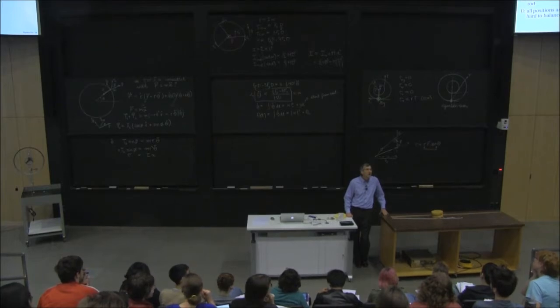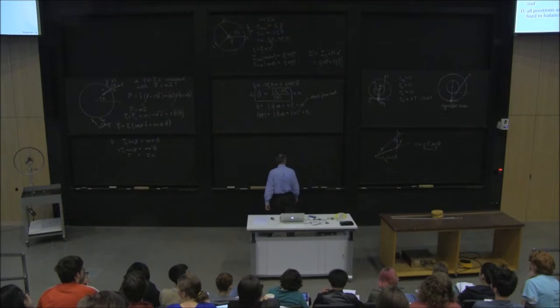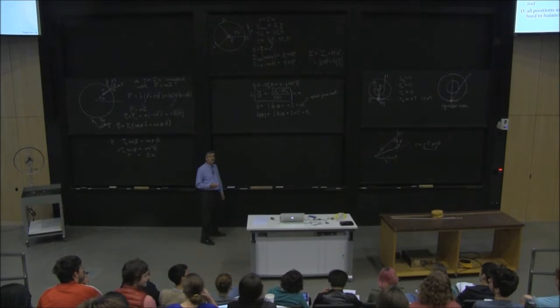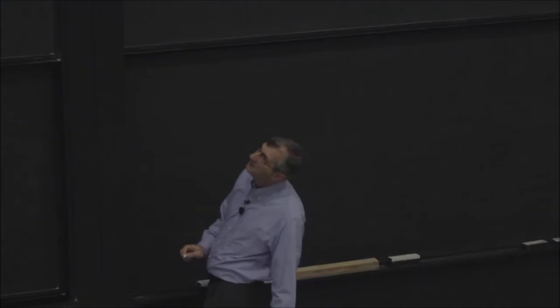Torque varies linearly with the center of mass distance from the axis of rotation. Yeah? But the moment of inertia varies quadratically. Yeah? And it's going to have basically effectively less acceleration when the center of mass is further away from the axis of rotation. Which way did I have it tip? Probably this way.